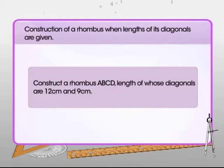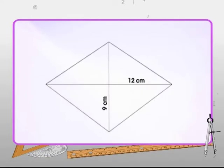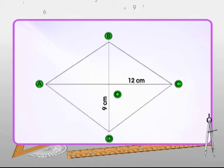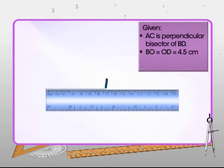Construction of a rhombus when length of its diagonals are given. Suppose you have to construct a rhombus the lengths of whose diagonals are 12 cm and 9 cm. Let's assume that ABCD is the rhombus to be constructed where length of AC is 12 cm and length of BD is 9 cm.